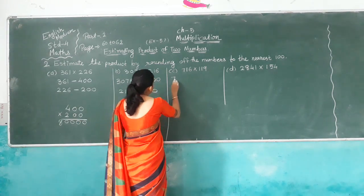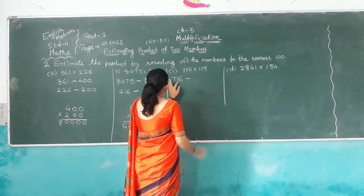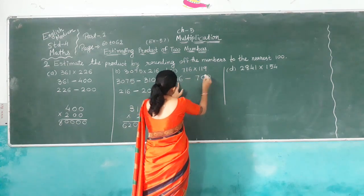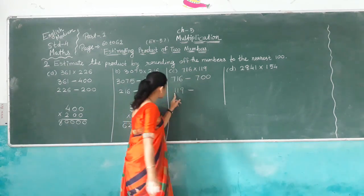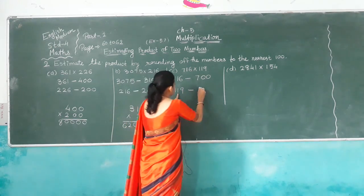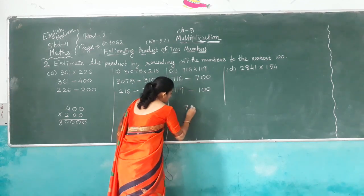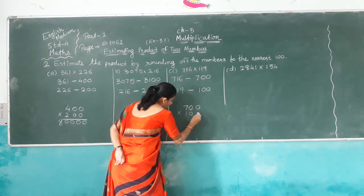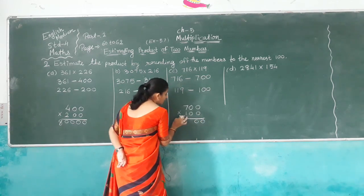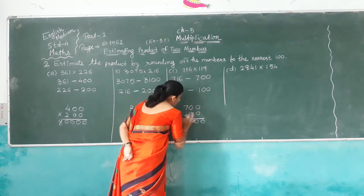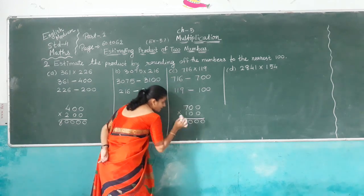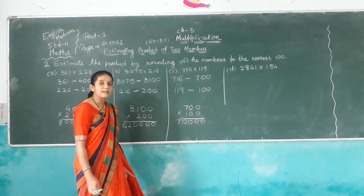Another one: 716 — tens digit is 1, less than 5, so nearest 100 is 700. Then 119: tens digit is 1, also less than 5, so nearest 100 is 100. Now multiply 700 by 100 — keep 2 zeros. 1 times 0 is 0, 1 times 0 is 0, 1 times 0 is 0, 1 times 7 is 7. We get answer 70,000.